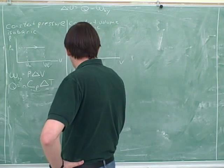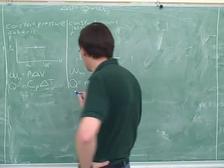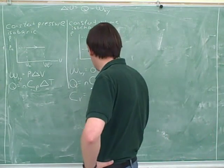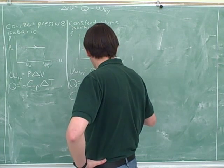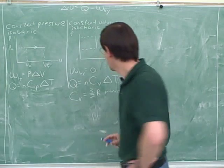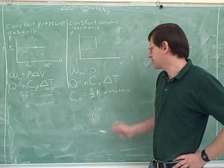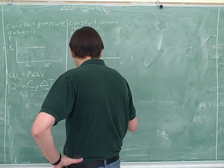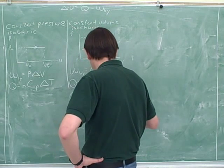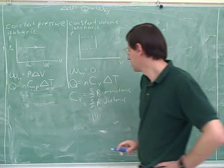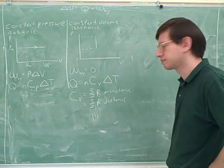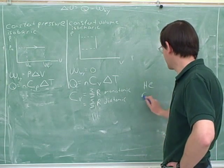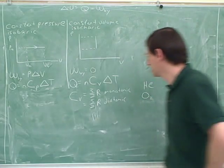Now we want to figure out what the molar specific heat actually is. For a monatomic gas, C sub V is three-halves R, and for a diatomic gas it's five-halves R. A monatomic gas is something like helium, and a diatomic gas is something like oxygen — a molecule with two atoms.